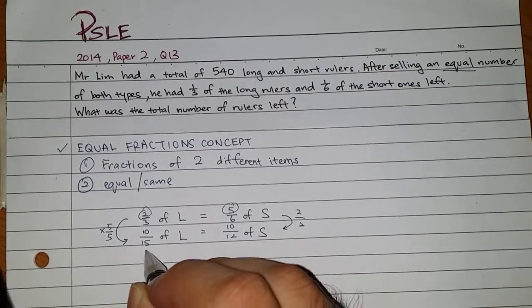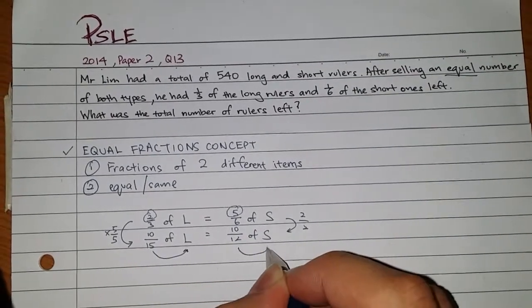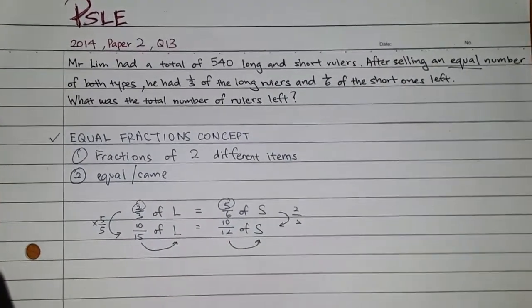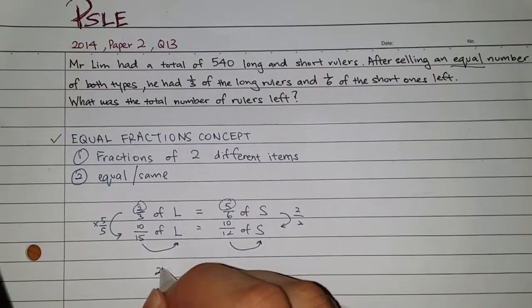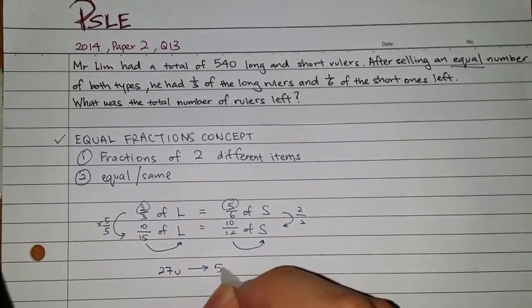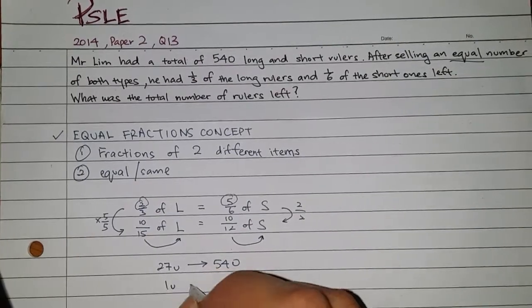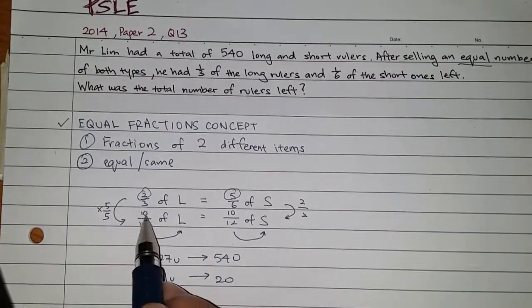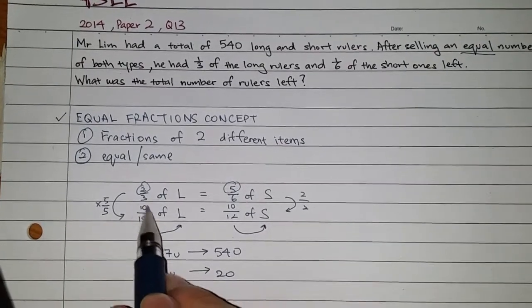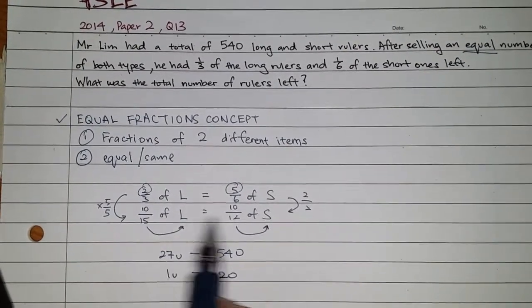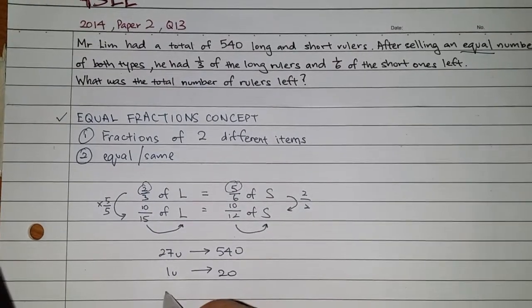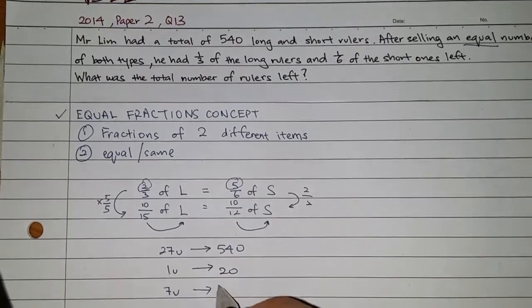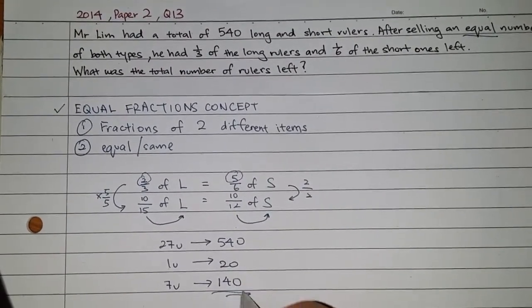From here I know that my long ruler I have 15 units and my short rulers I have 12 units. In short I can say that 27 units is equal to 540. 1 unit is equal to 20. How many rulers were left? You have 5 units left and 2 units are left. Answer is 7 units. My answer is 140.